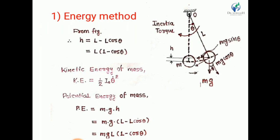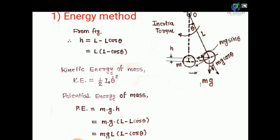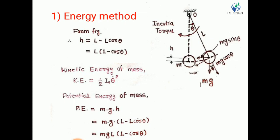As shown in the figure, this is the neutral axis. If we displace the pendulum by an external excitation force, it will oscillate. In this case, we consider there is no pivot friction and no air resistance, so we neglect both pivot friction and air resistance.